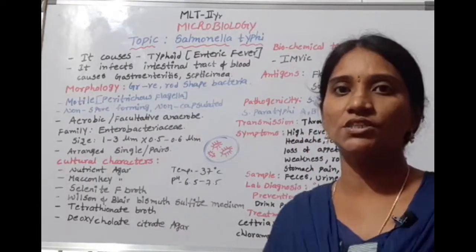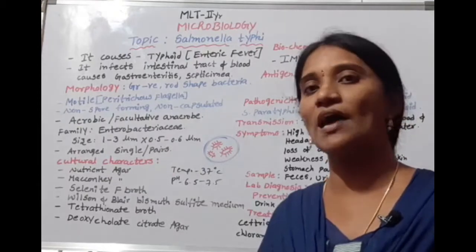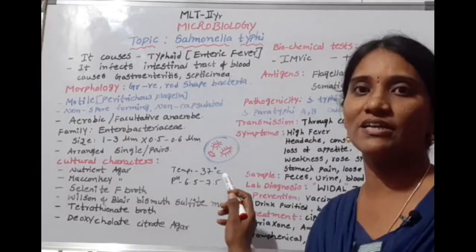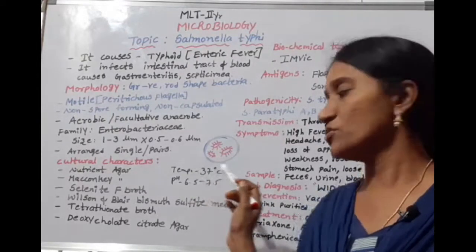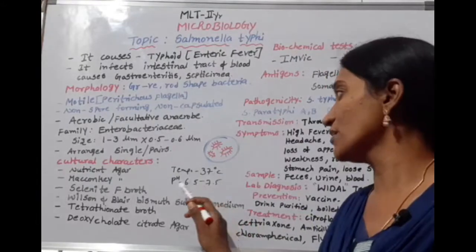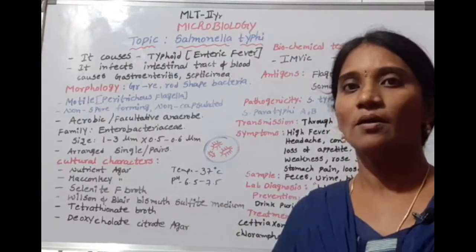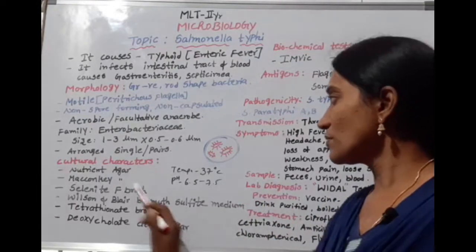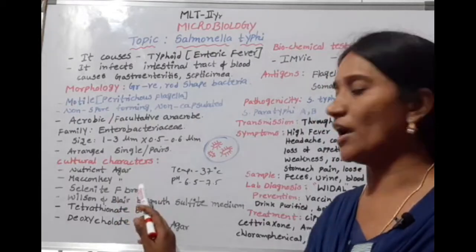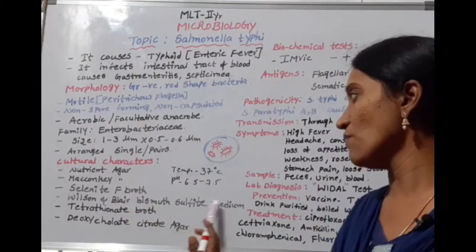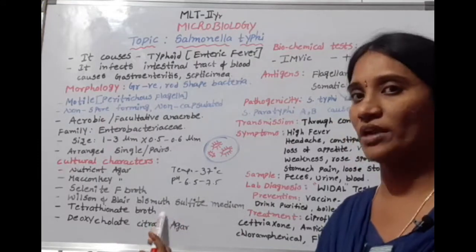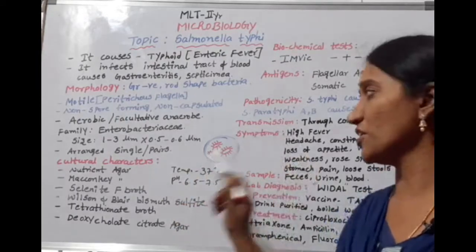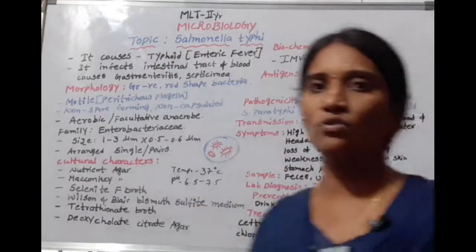The growth temperature is 37 degrees Centigrade, and the pH range is 6.5 to 7.5 — slightly acidic to slightly alkaline conditions. Salmonella typhi grows on nutrient agar, MacConkey agar, Selenite F-broth, Wilson-Blair Bismuth Sulfite medium, Tetrathionate broth, and Deoxycholate Citrate Agar at these conditions.